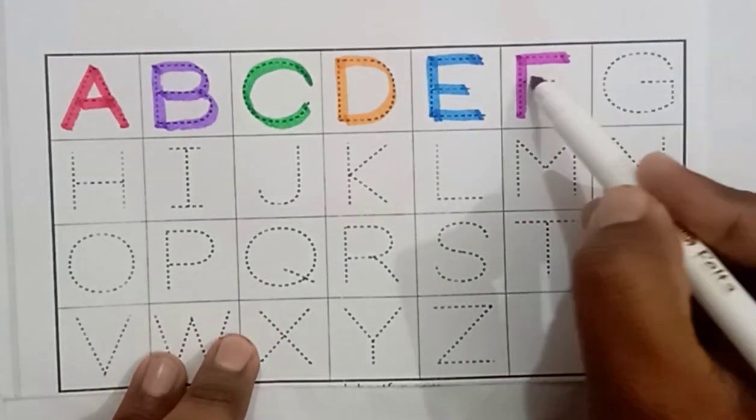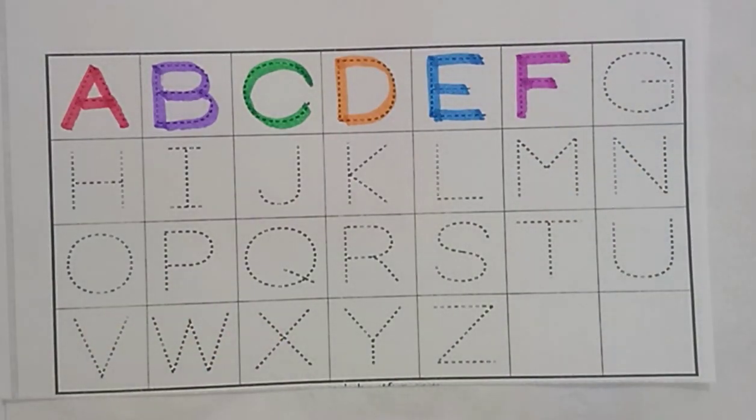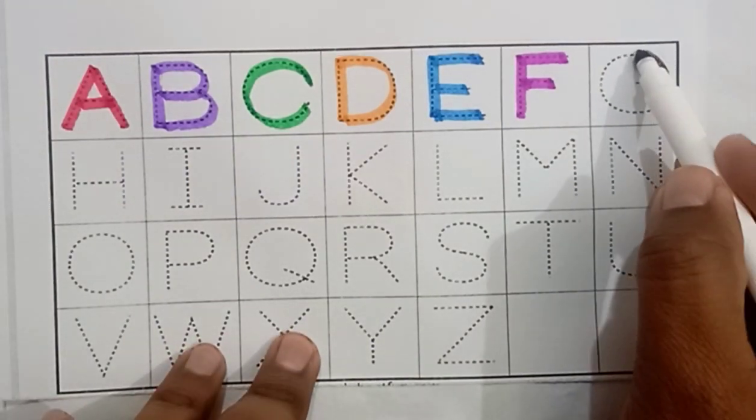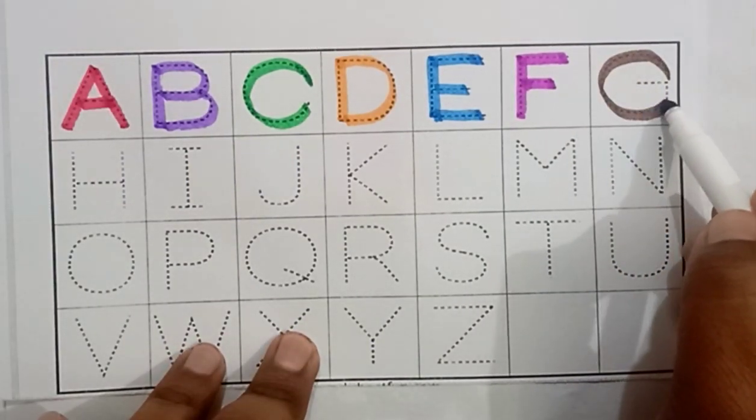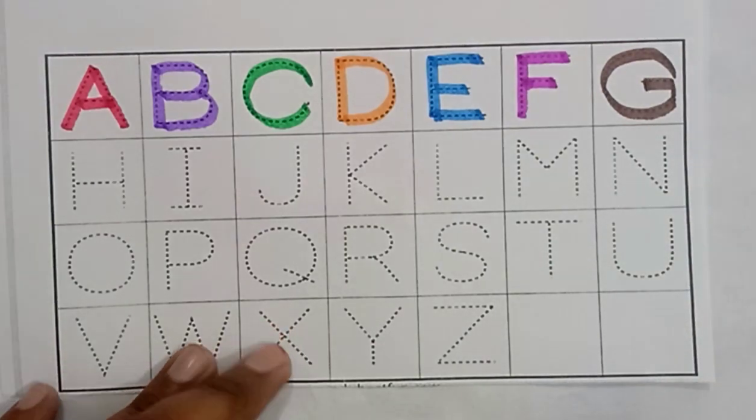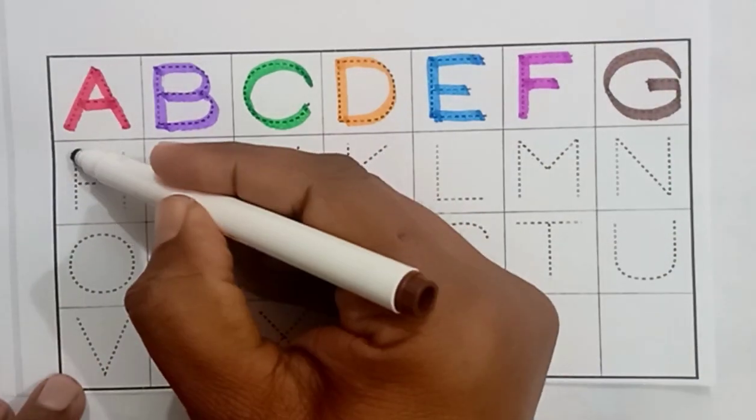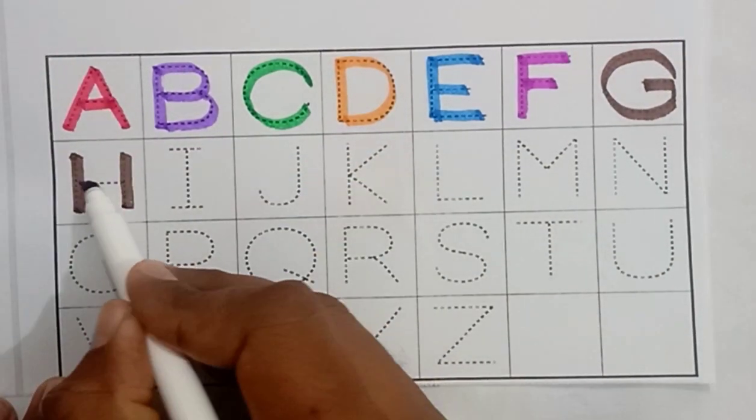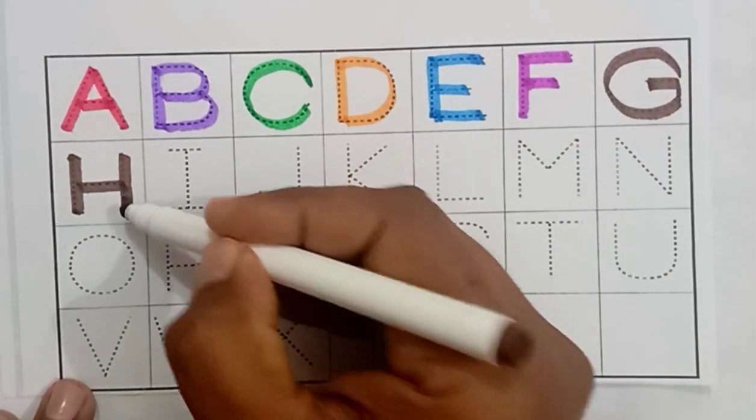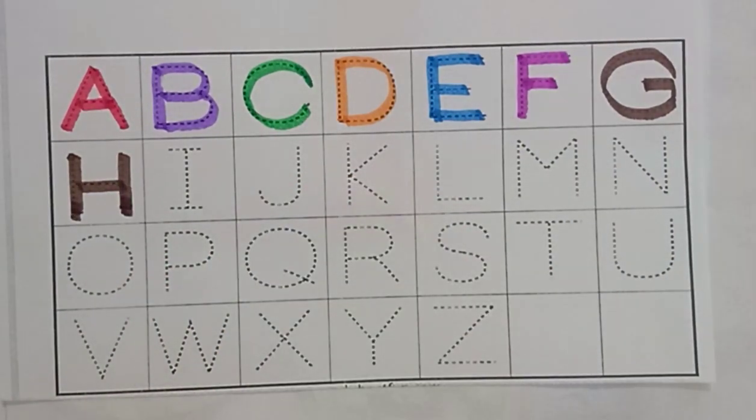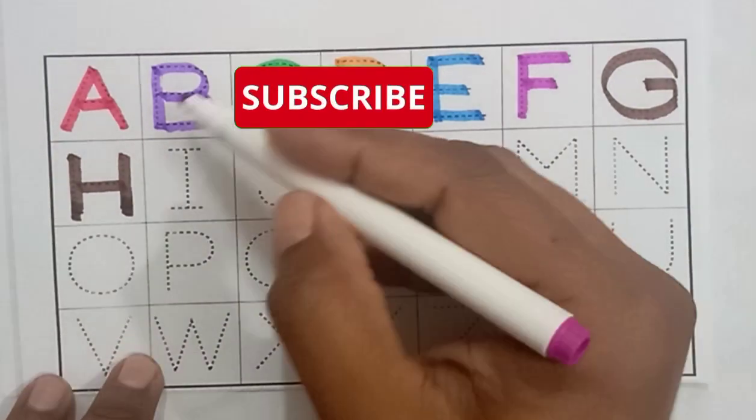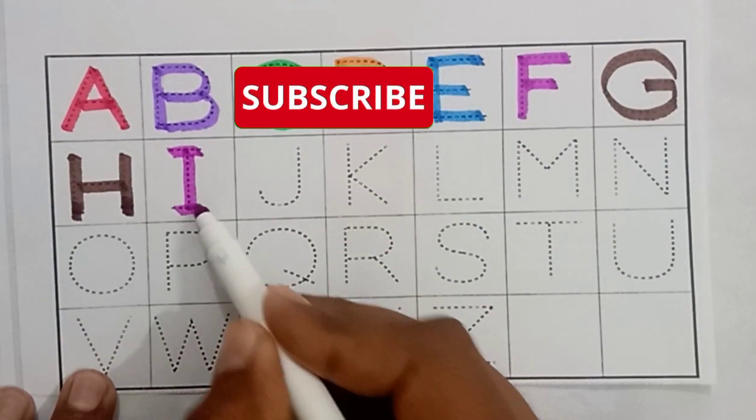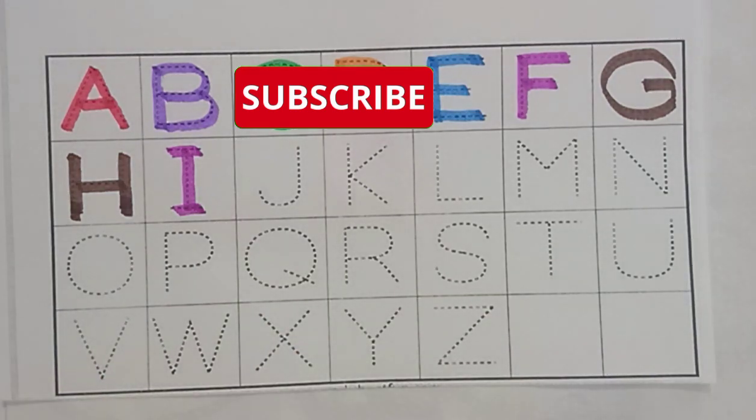Purple color F, F for fish. Brown color G, G for gate. Brown color H, H for house.